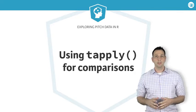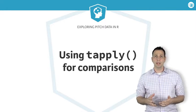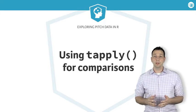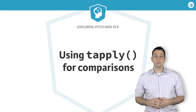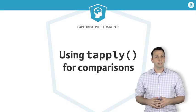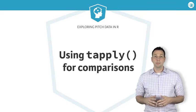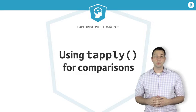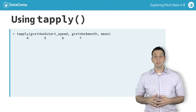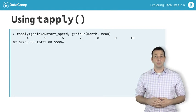In the previous exercise, breaking the data into different groups allowed you to compare distributions of velocity for July relative to other months in 2015. But it's often useful to also get numeric summaries of each group for comparison, to use in more complex visualization. In R, one way to do this is to use the tapply function.